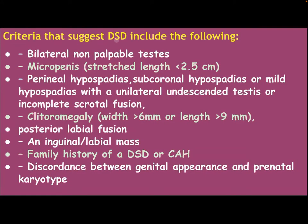Criteria that suggest DSD include the following: bilateral non-palpable testes, micropenis with stretched length less than 2.5 cm, perineal hypospadias, subcoronal hypospadias or mild hypospadias with unilateral undescended testis, or incomplete scrotal fusion. Also clitoromegaly with clitoral width more than 6 mm or length more than 9 mm, posterolabial fusion, an inguinal or labial mass, family history of DSD or congenital adrenal hyperplasia, and discordance between genital appearance and prenatal karyotype.